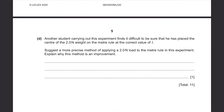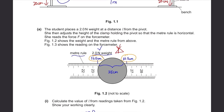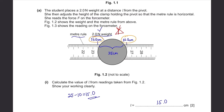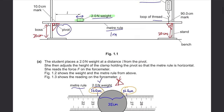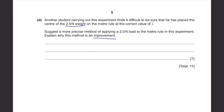Part D: another student finds it difficult to ensure the center of the 2N weight is placed at the correct value of L. Suggest a more precise method of applying a 2N load to the meter rule. The problem is the weight has a width, making it hard to pinpoint exactly 25cm. A better method is to hang the load using a cotton loop — the cotton loop can be placed precisely on the exact mark on the meter rule.